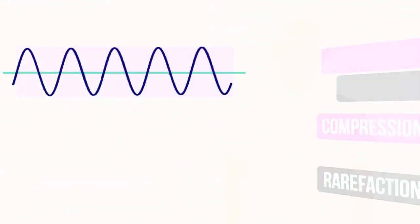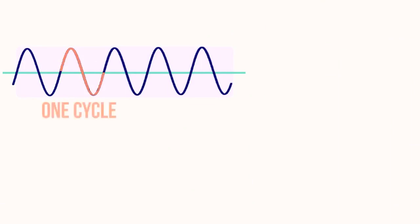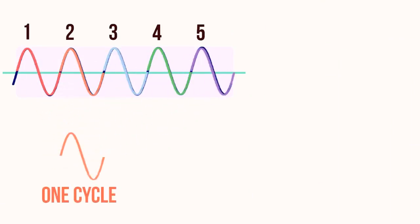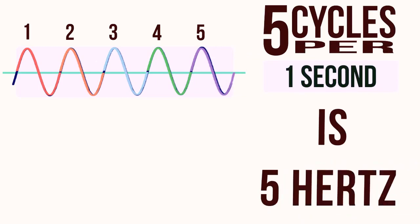The frequency of a wave is determined by counting the number of cycles within a given time period. For sound, we use the SI unit of Hertz, meaning we count how many cycles occur per second.